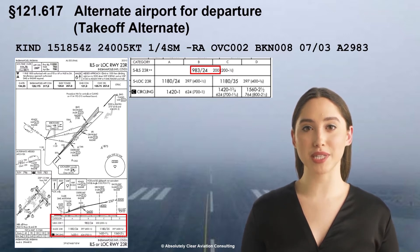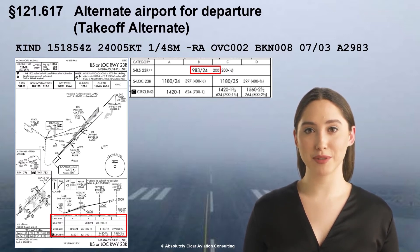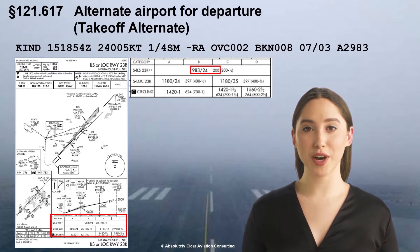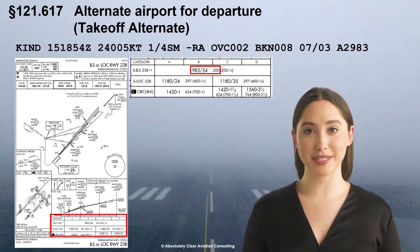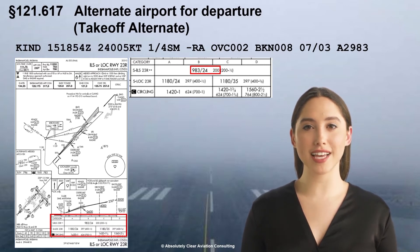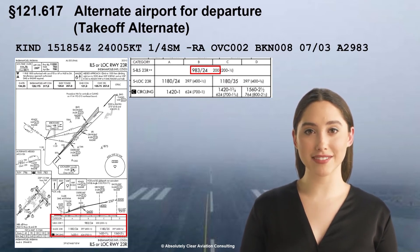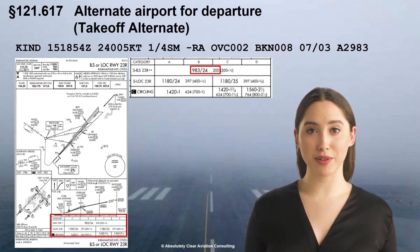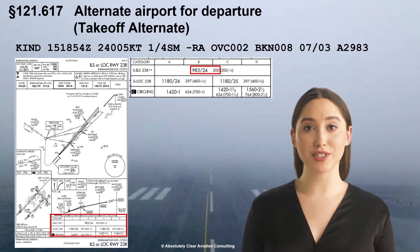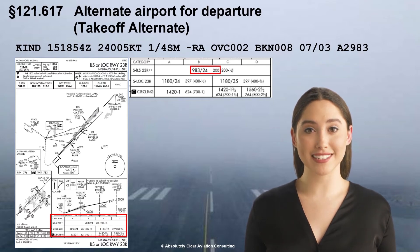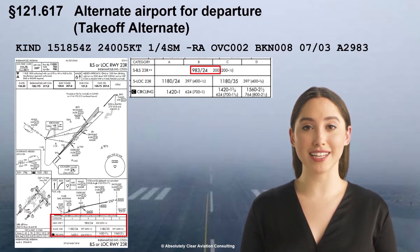The published approach minimum visibility for a straight-in approach to this runway is 2400 RVR, which is equivalent to one half statute mile. So unless the current visibility is at least one half statute mile or 2400 RVR at the time of departure, a takeoff alternate must be specified. Keep in mind that any suitable runway served by an operational instrument approach system is acceptable and need not be the runway used for takeoff.